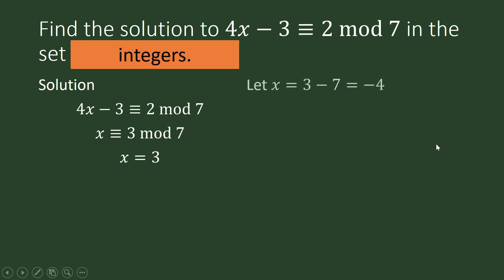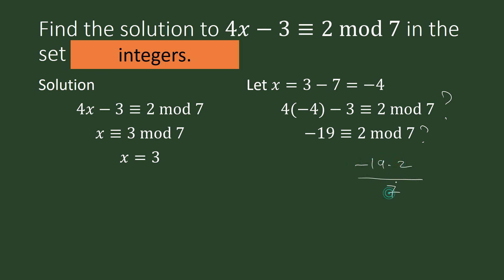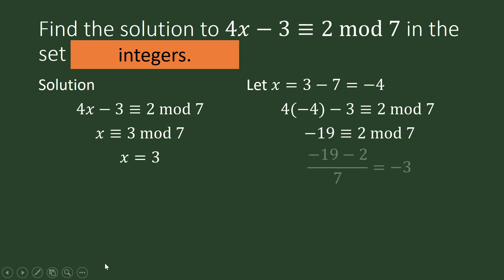Now let us subtract 7 from 3. So 3 minus 7 is negative 4. Is negative 4 a solution to our congruence equation? 4 times negative 4 is negative 16, minus 3 is negative 19. Using the definition of congruence modulo 7: negative 19 minus 2 divided by 7 — is this division exact? Yes, because it equals negative 21 divided by 7, which equals negative 3. So negative 4 is also a solution.